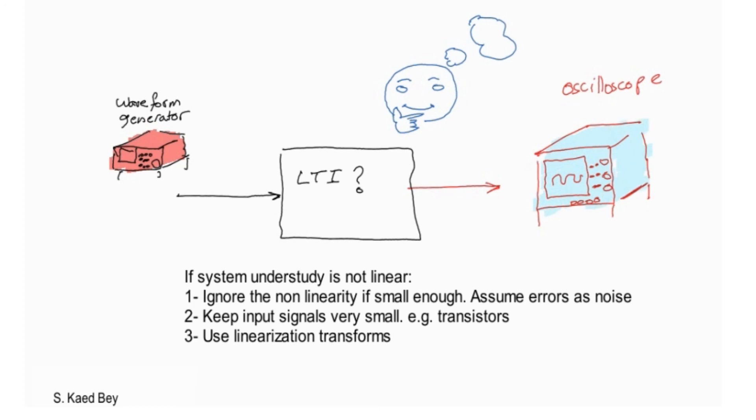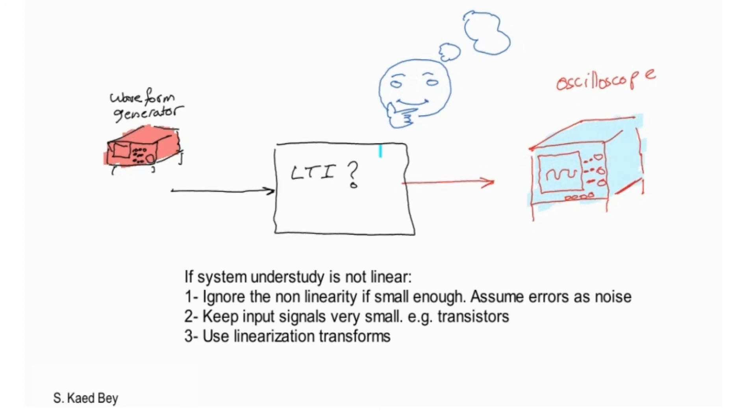Or perhaps, your second strategy could be to keep your signals very small. Many nonlinear systems appear linear if the signals have a very small amplitude. And this is the case with transistors, for example. Transistors are very nonlinear over their full range of operation, but provide an accurate and linear amplification when the signals are kept under few millivolts, for example.